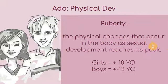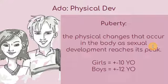Puberty refers to the physical changes that occur in the body as sexual development reaches its peak. In terms of physical development, it already reaches full maturity — that means it achieves full sexual function. That is probably the reason why this stage of akil balik is acknowledged to allow one to be married.